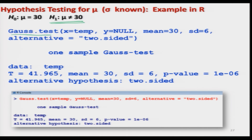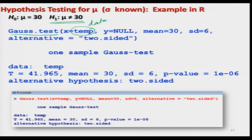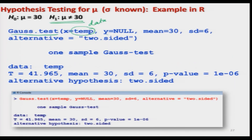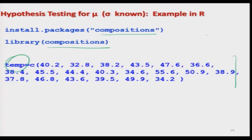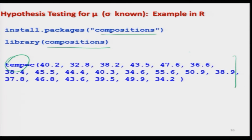Since the p-value (approximately 10^-6) is much smaller than alpha = 0.05, H naught is rejected. For H1: mu less than 30, change alternative to 'less' — the p-value comes out to be 1, which is greater than alpha = 0.05, so H naught is not rejected. Similarly, for H1: mu greater than 30, the p-value is again approximately 1, greater than alpha, so H naught is again not rejected.